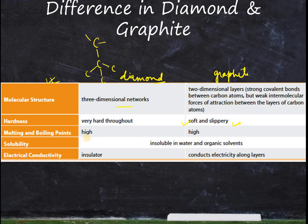Regarding melting and boiling point, both diamond and graphite have very high melting and boiling points because the force of attraction between the carbon atoms in both forms is very strong. For solubility, since they are covalent molecules, neither dissolves in water nor in organic solvents.